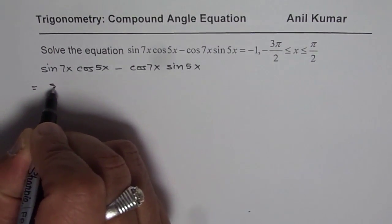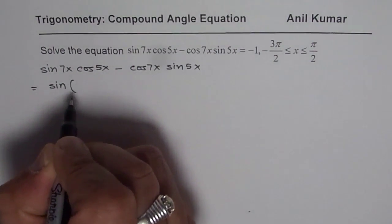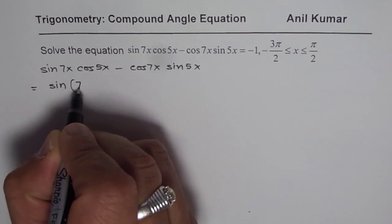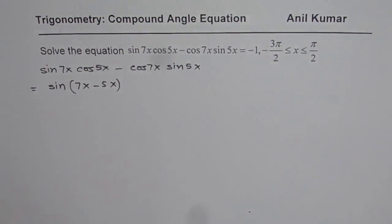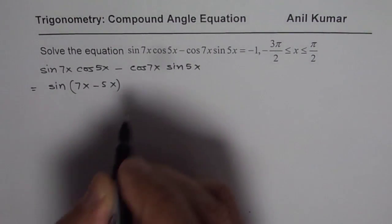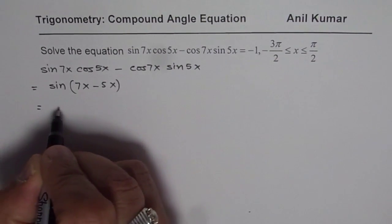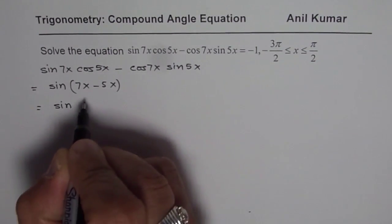This could be written as sin 7x minus 5x. That is the compound angle formula for a minus b which gives you this result. So, sin 7x minus 5x which is equals to sin 2x.